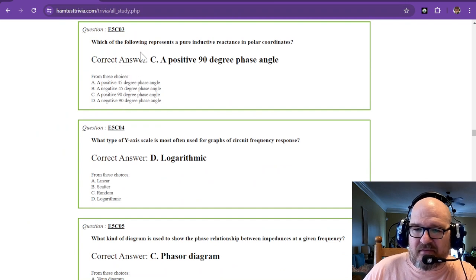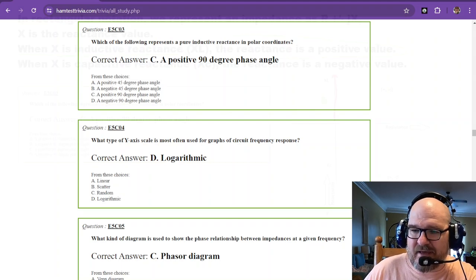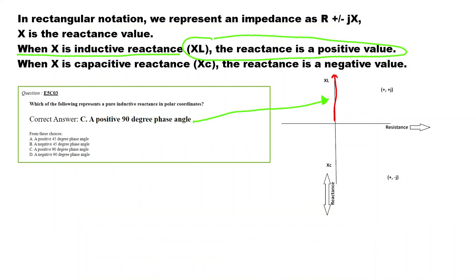Question number three. Which of the following represents a pure inductive reactance in polar coordinates? Well, remember, inductive is positive. So if we go to drawing number three again, you can see that inductive is positive, and it's a 90 degree angle. So it's straight up. I did not draw the angles on any of these, but if you wanted to, you start here at your origin, and you just draw your angle to your point. And then, of course, you could figure out the angle if you wanted to. And that angle would show you, does current lead, and how much does it lead by, or does voltage lead, and how much does it lead by?